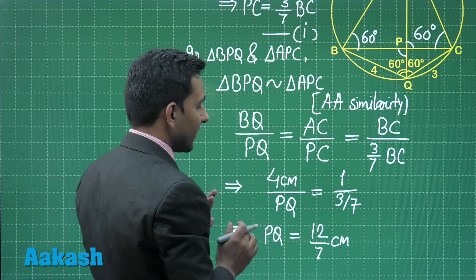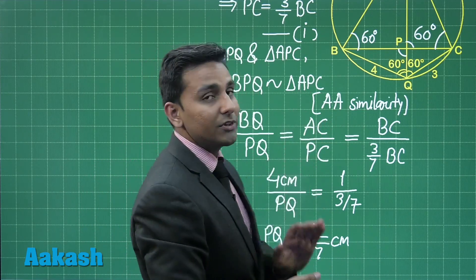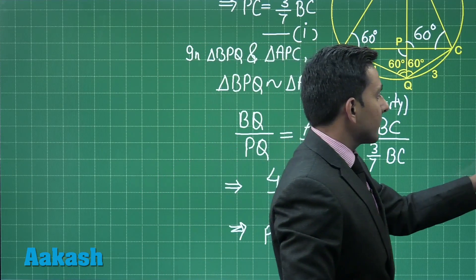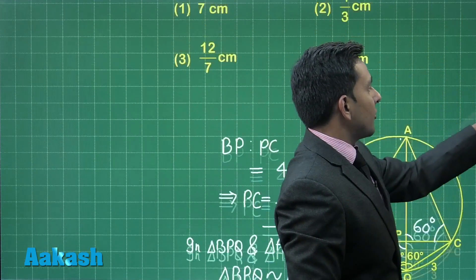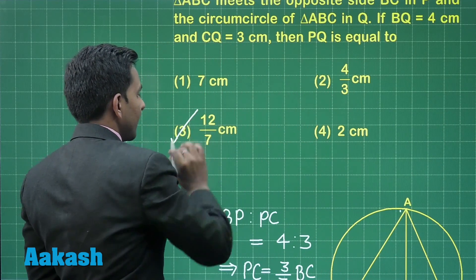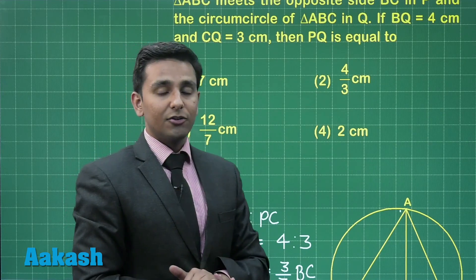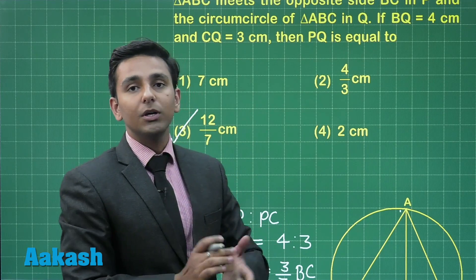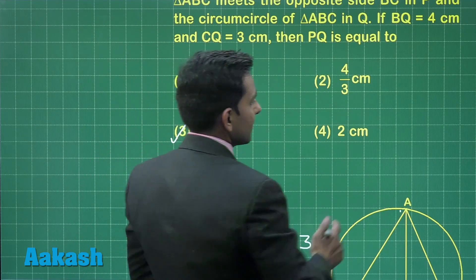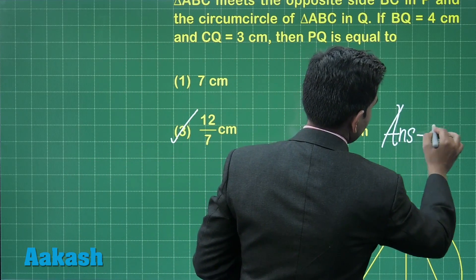So 12 divided by 7 centimeters is the length of line segment PQ. From the options, the third option is the correct answer, as it gives the length of line segment PQ equal to 12 upon 7 centimeters. The answer for this question is option number 3.